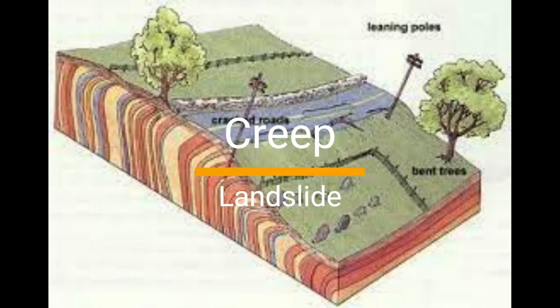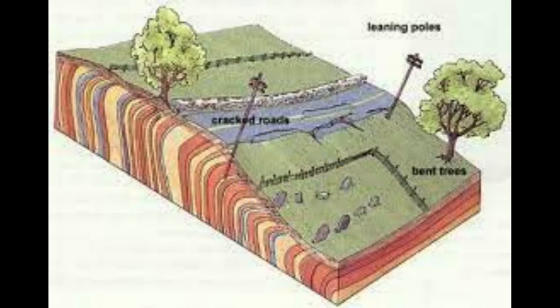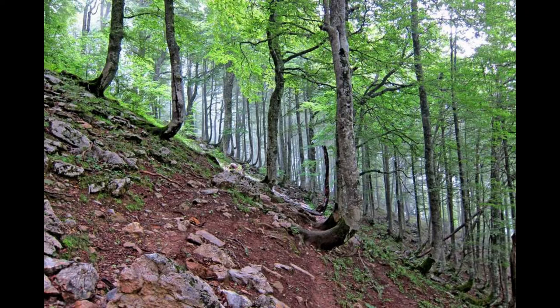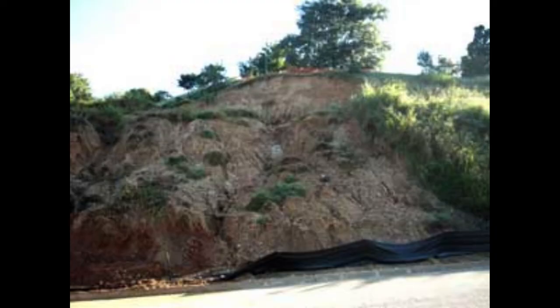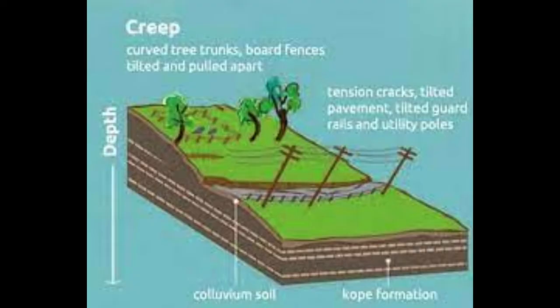A creep landslide, also known as a slow-moving landslide or a creep, is a type of landslide that occurs gradually over time. Unlike rapid landslides, which can occur suddenly and cause catastrophic damage, creep landslides move slowly and usually do not cause immediate danger to people or infrastructure. They are typically characterized by a slow, downhill movement of soil, rock, and debris, often at a rate of only a few millimeters or centimeters per year.